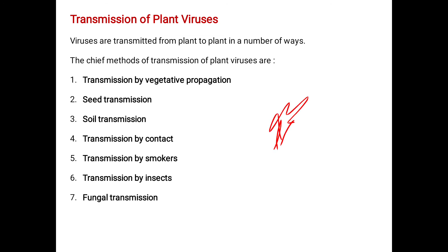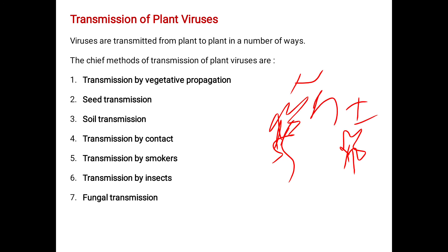An infected plant can transfer the infection to a healthy plant. Just as keeping a healthy fruit with an infected fruit results in the healthy fruit getting infected too. The modes of transmission include: transmission by vegetative propagation, seed transmission, soil transmission, transmission by contact, transmission by smokers, transmission by insects, and fungal transmission.